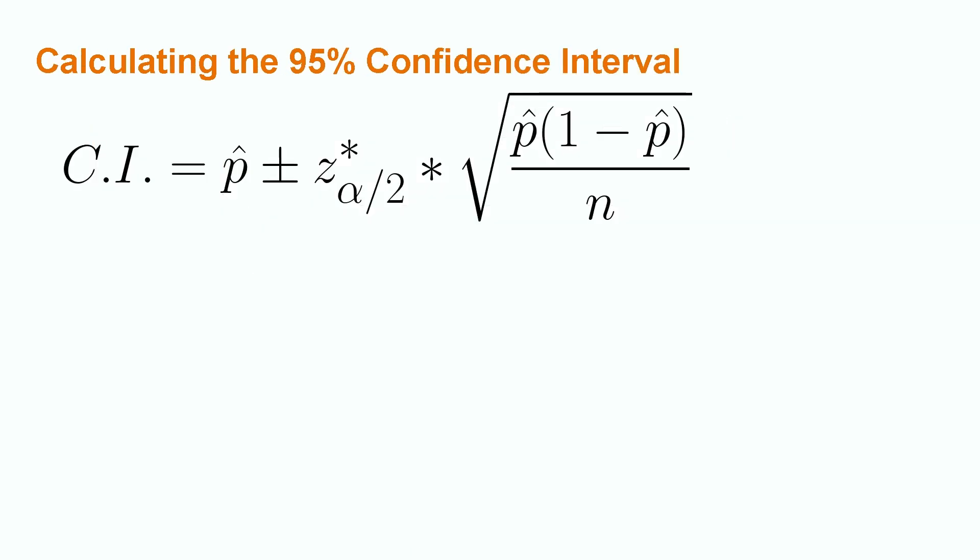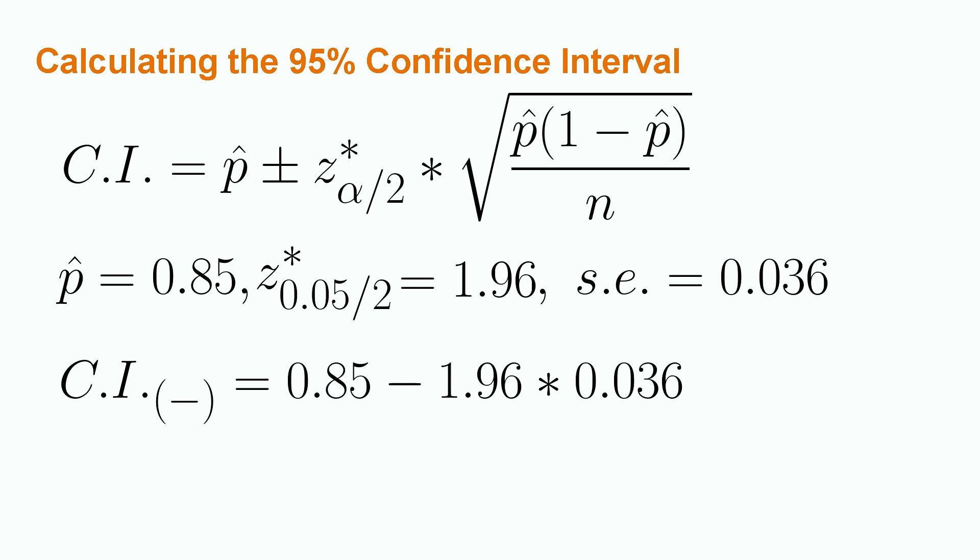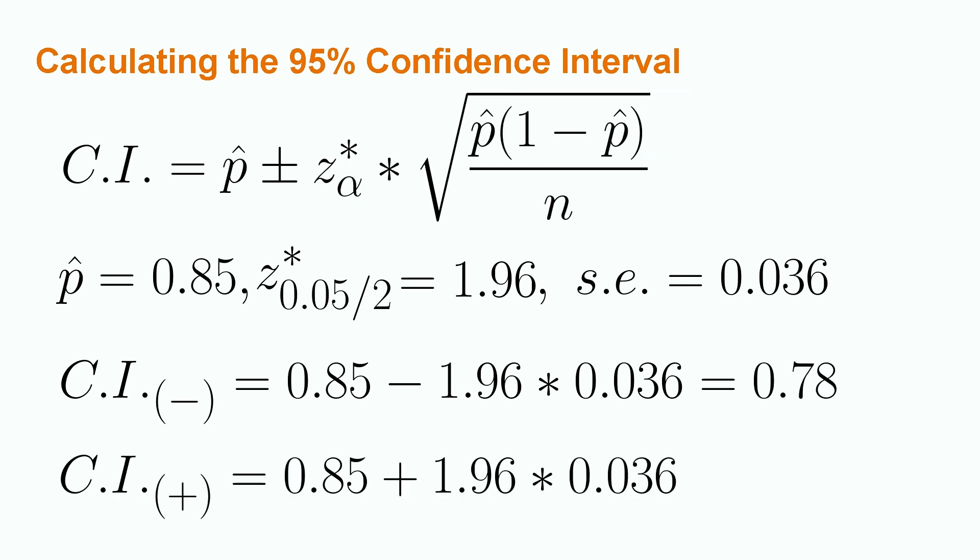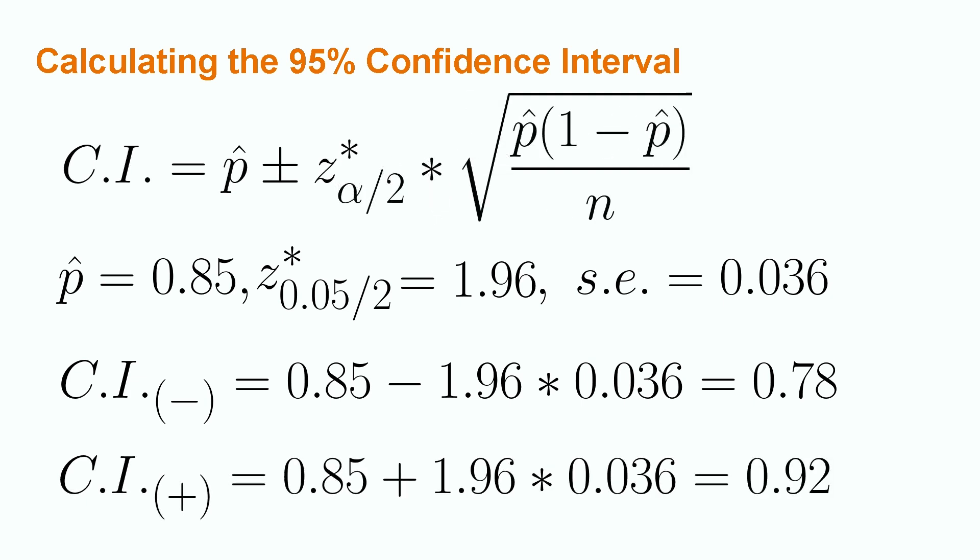With all of this information, we can now go back and calculate our two confidence intervals. Let's start with the 95% confidence interval. We recall the confidence interval for the single population proportion is equal to p-hat plus or minus the z-score times the standard error. For the 95% confidence level, we have that p-hat equals 0.85, z-star equals 1.96, and the standard error is equal to 0.036. From here, we can calculate the lower bound of the confidence interval as 0.85 minus 1.96 times 0.036. This yields a lower bound of 0.78. Similarly, the upper bound is equal to 0.85 plus 1.96 times 0.036, which yields 0.92.